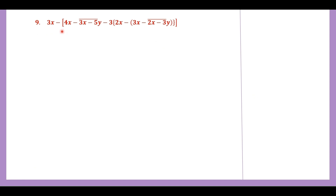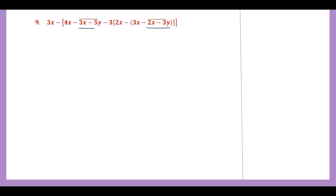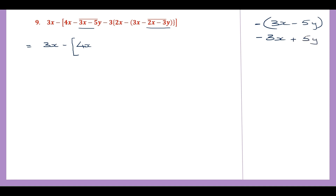Question 9. Here we have the square bracket, bar bracket, curly bracket, and the parenthesis. So we have to open the bar brackets first. So let's underline what we have to work on first and write everything else as it is. So this will be 3x minus 4x. Now what do we have below the bar bracket? We have 3x minus 5y. But before the bracket we have a minus sign, so we are going to change the sign of all the terms. So this becomes minus 3x plus 5y, which we write here.